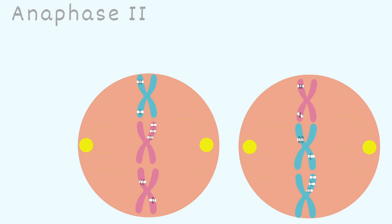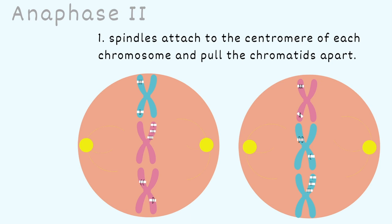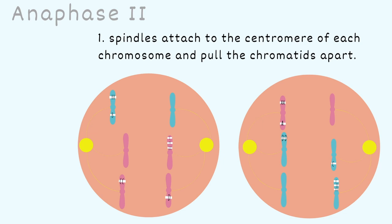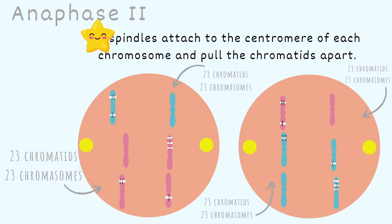After metaphase 2, the cell moves on to anaphase 2. Here, the spindles attach to the centromere of each chromosome and pull the chromatids apart. Remember the structure that the spindle fibers specifically attach to? The kinetochores — specifically, the spindle fibers attach to the kinetochore on the centromere. In anaphase 2, we have 23 chromatids, which equals 23 chromosomes, on each of the four ends. We count the number of chromosomes by the number of centromeres present.